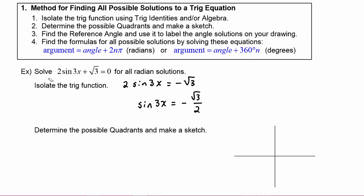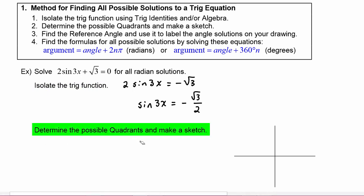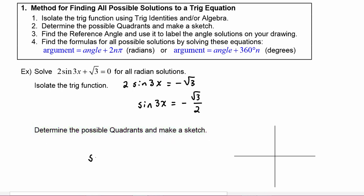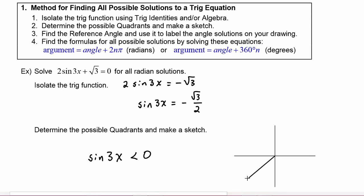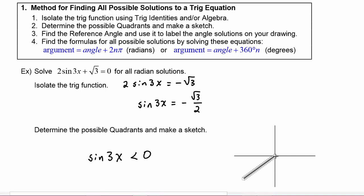In step two, we have to determine the possible quadrants and make a sketch. Because the sine of 3x is negative, we know we are going to have to be in quadrant 3 and quadrant 4.